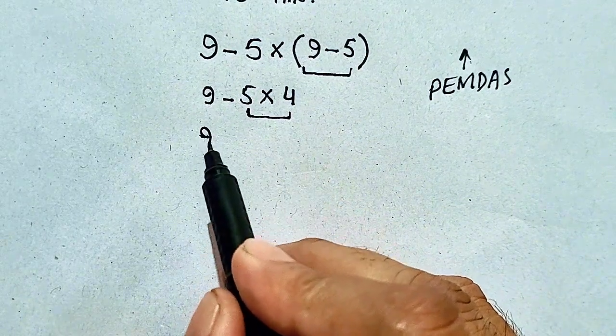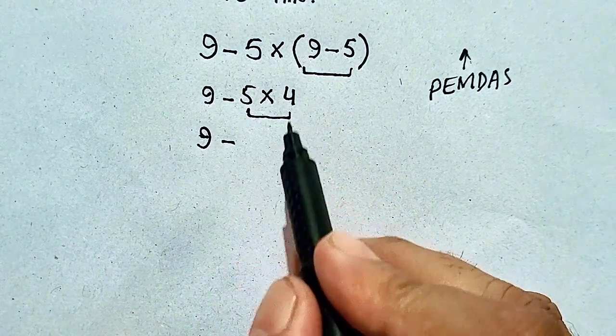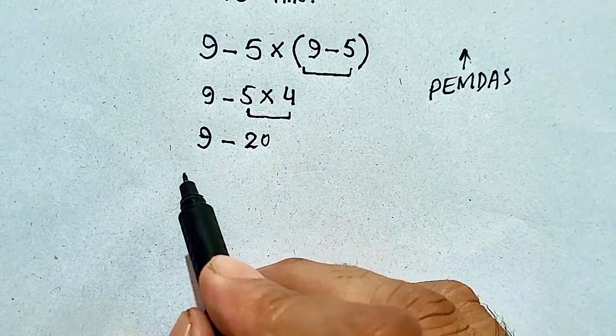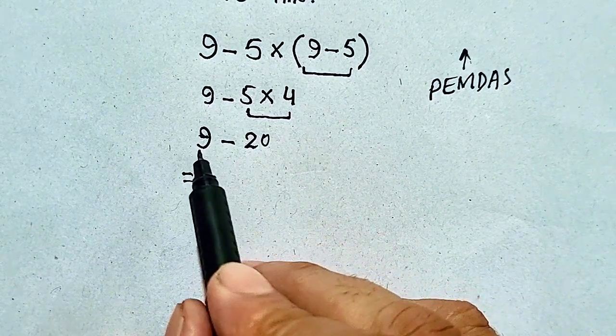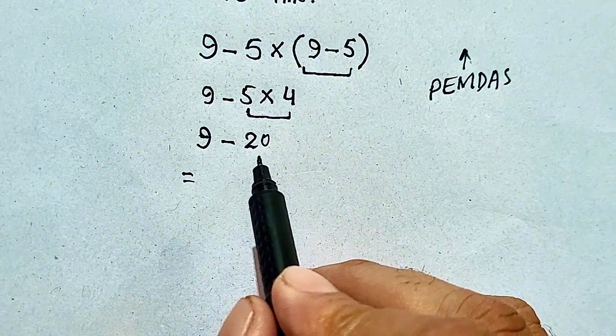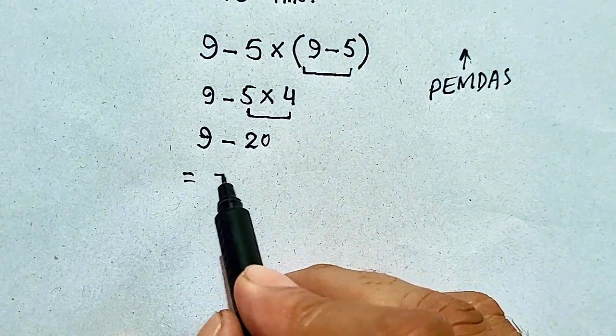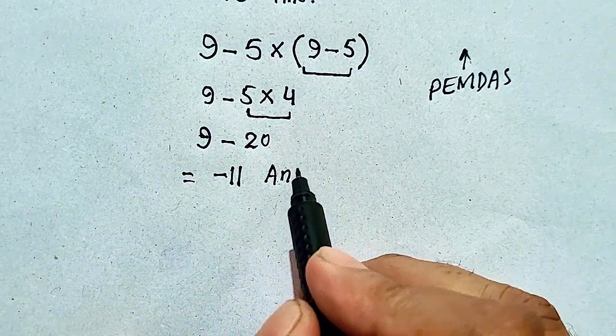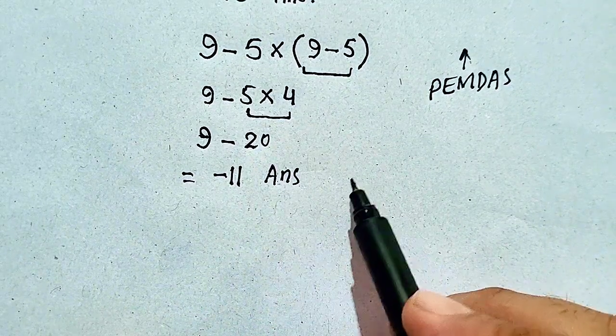We will get 9 minus 5 times 4 will be equal to 20. 9 minus 20 will be equal to minus 11, which will be our correct answer.